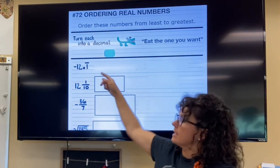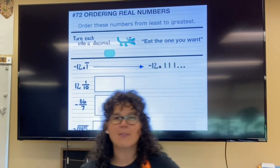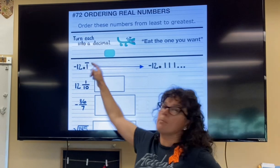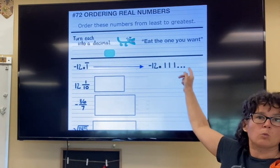This one is already basically a decimal, so I'm just going to arrow off to the side and expand that a little further. Negative 12.1 with a bar over the 1 is negative 12.111111 forever.